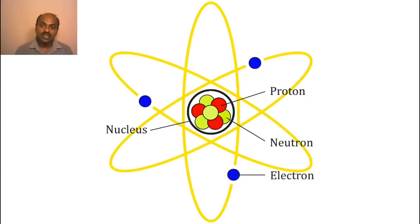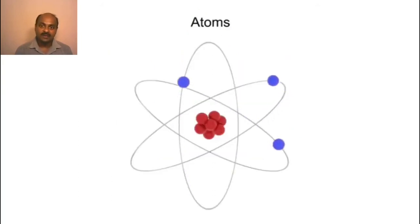Let us understand the structure of an atom. An atom is made up of a central core or a nucleus, around which tinier particles called electrons orbit, just like the planets orbit the sun.